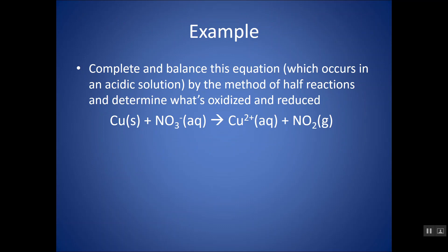Here's an example where step one is already done — a skeleton equation showing what's being oxidized and reduced. The Cu is going from zero to plus two, so it's being oxidized. The nitrogen is going from plus five in NO3⁻ to plus four in NO2, so that's being reduced. If I tried to balance this right now, I'd go in circles, because there must be other species involved that aren't shown — they're just not being oxidized or reduced.